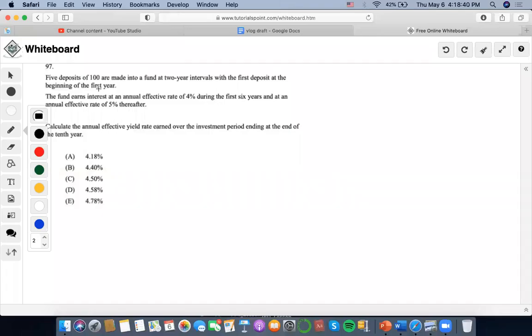Hi, so for this one it says five deposits of $100 remain in the fund at two-year intervals with the first deposit at the beginning of the first year. Okay, so what does that look like? Well, first deposit's at the beginning of the first year, so let's see $100 here, and then every two years.